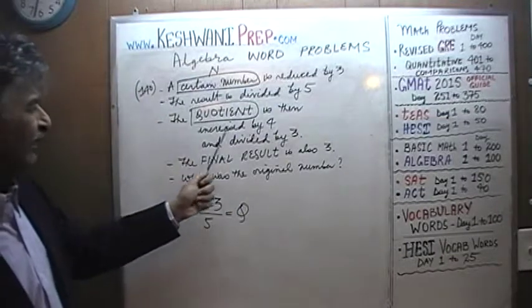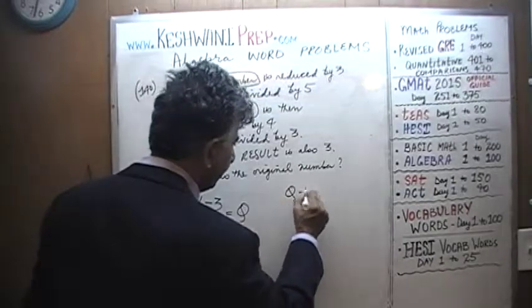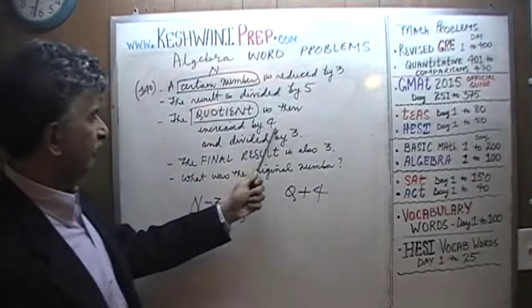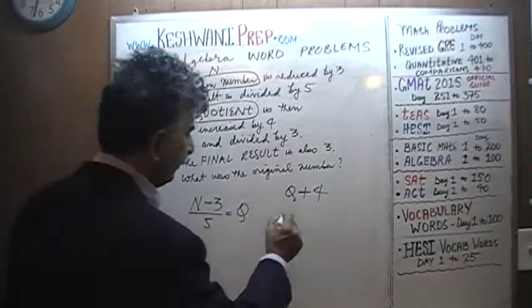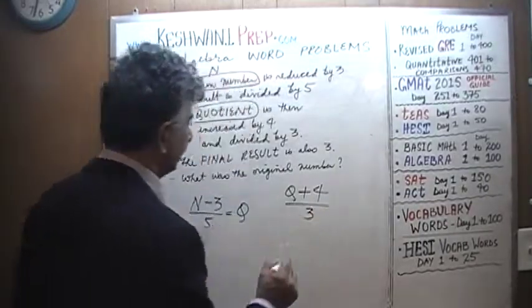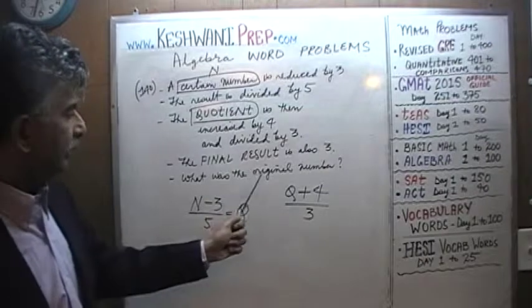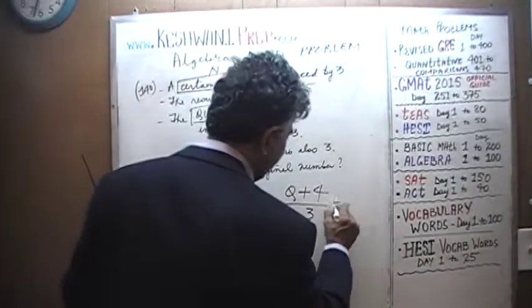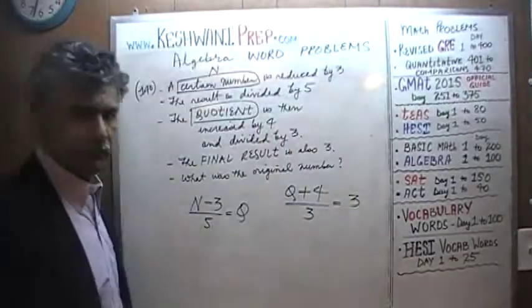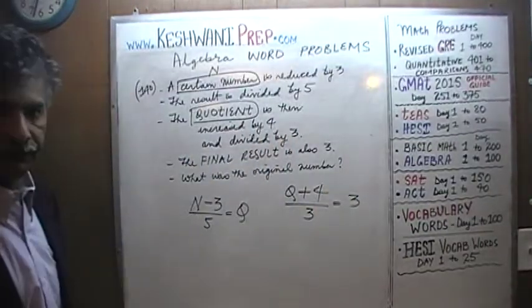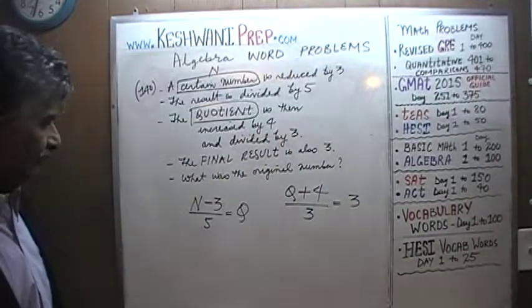And what are we supposed to do with that quotient? The quotient is then increased by 4. So here we have the quotient. We're going to increase it by 4. Quotient is increased by 4 and divided by 3. So we increase it by 4, now we divide it by 3. And we are told that when we do that, the final result also happens to be 3. So this final result also happens to be 3. The question is, what is the value of N?